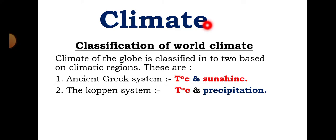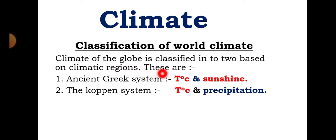Climate is an average atmospheric condition, but weather is a single atmospheric condition which exists for a short period of time. The classification of world climate: the climate of the globe is classified into two systems — the ancient Greek system and the Koppen system.